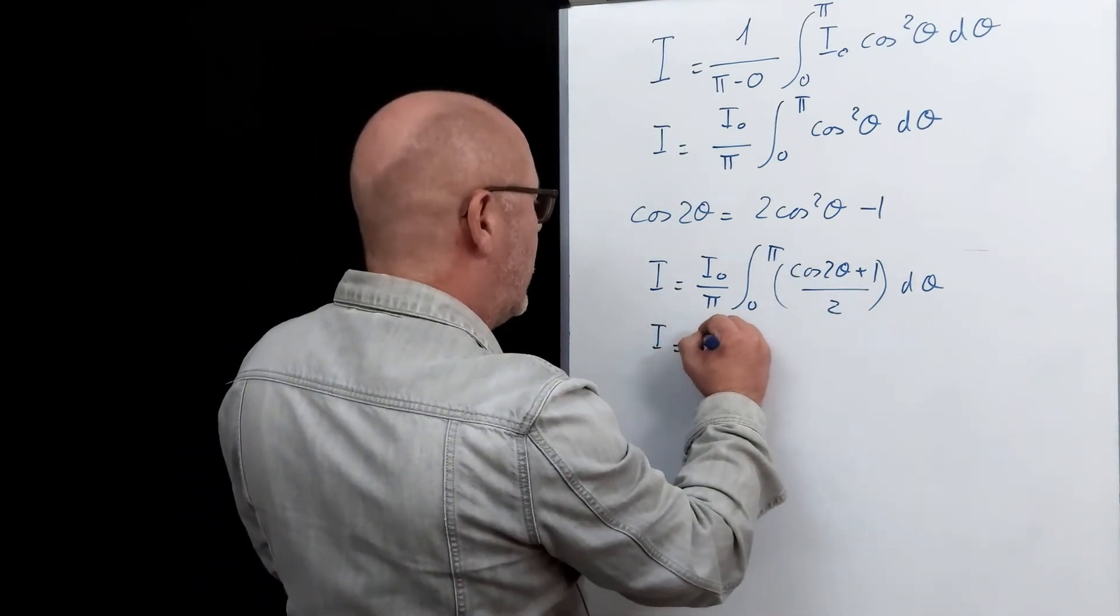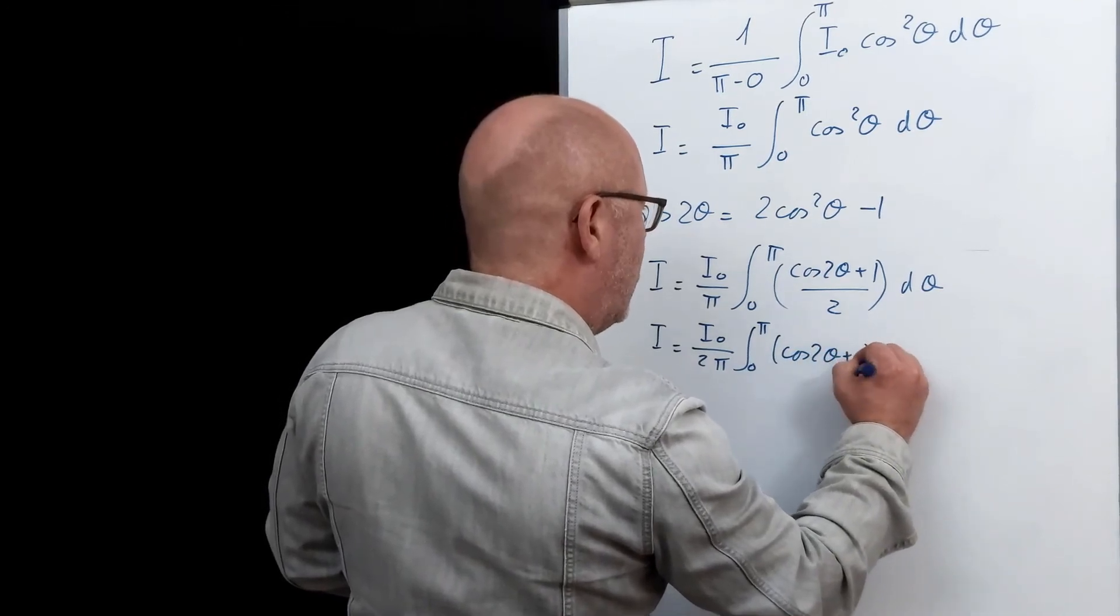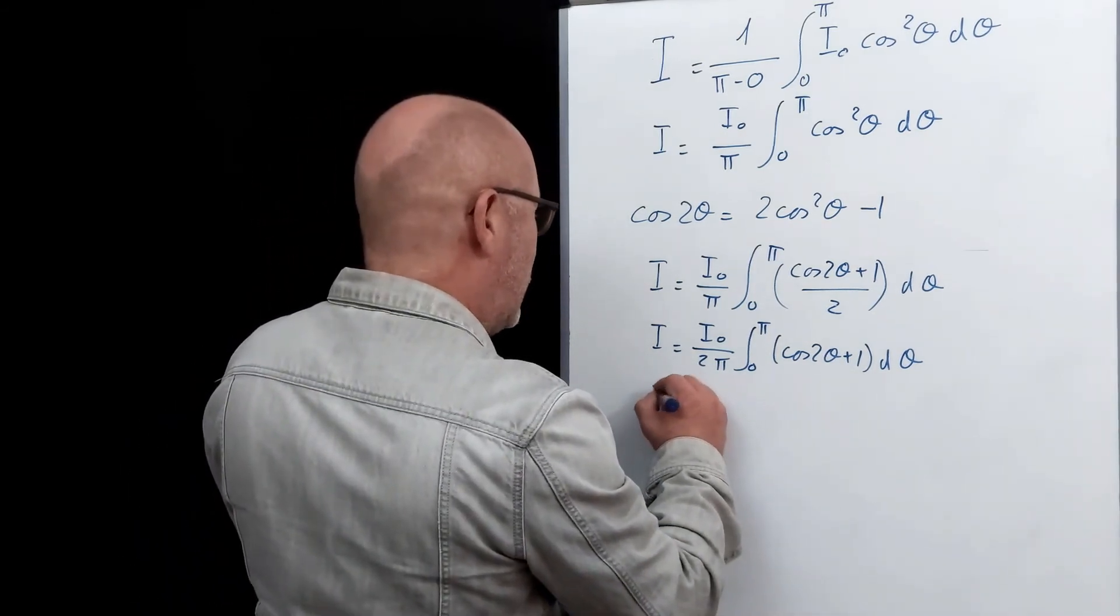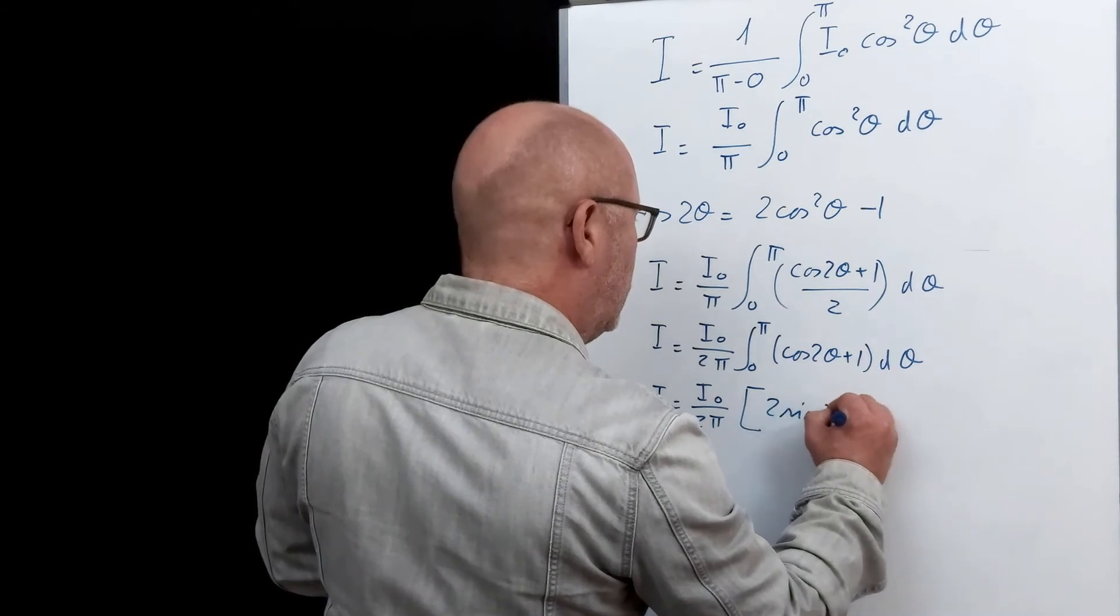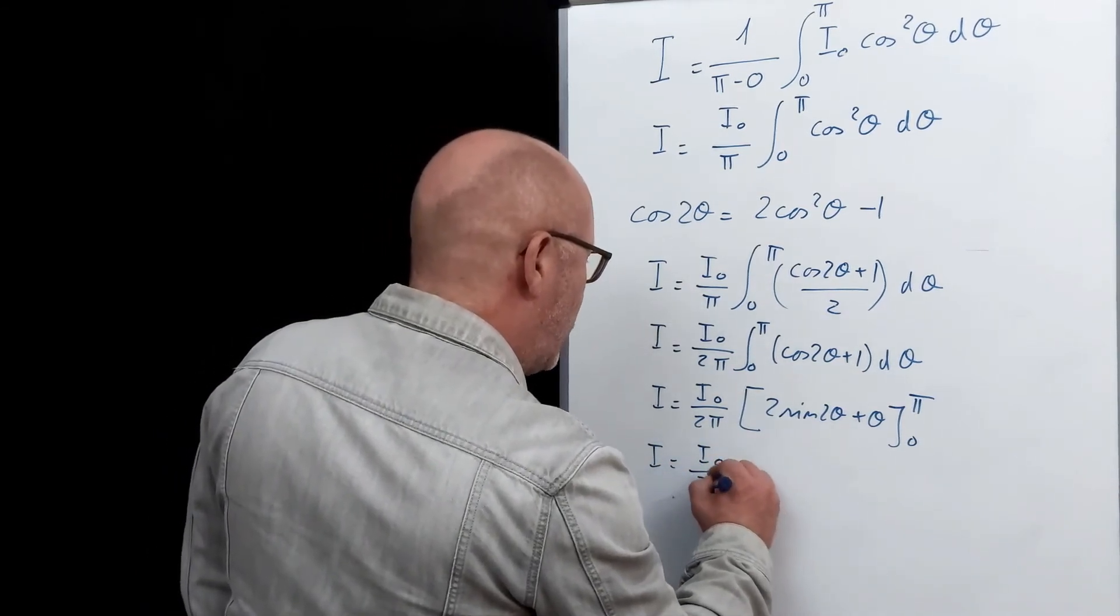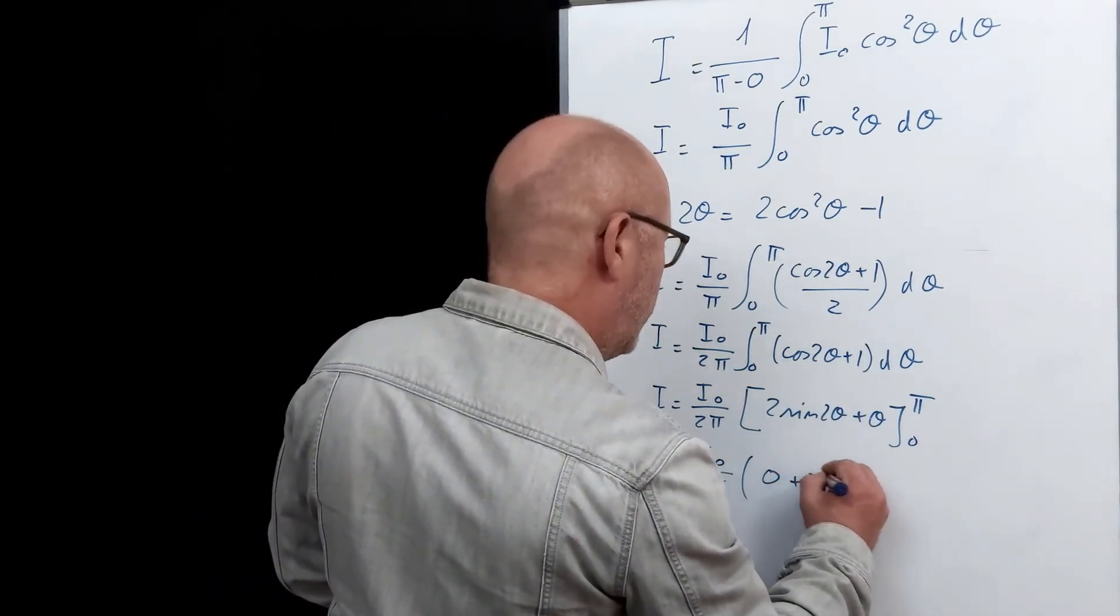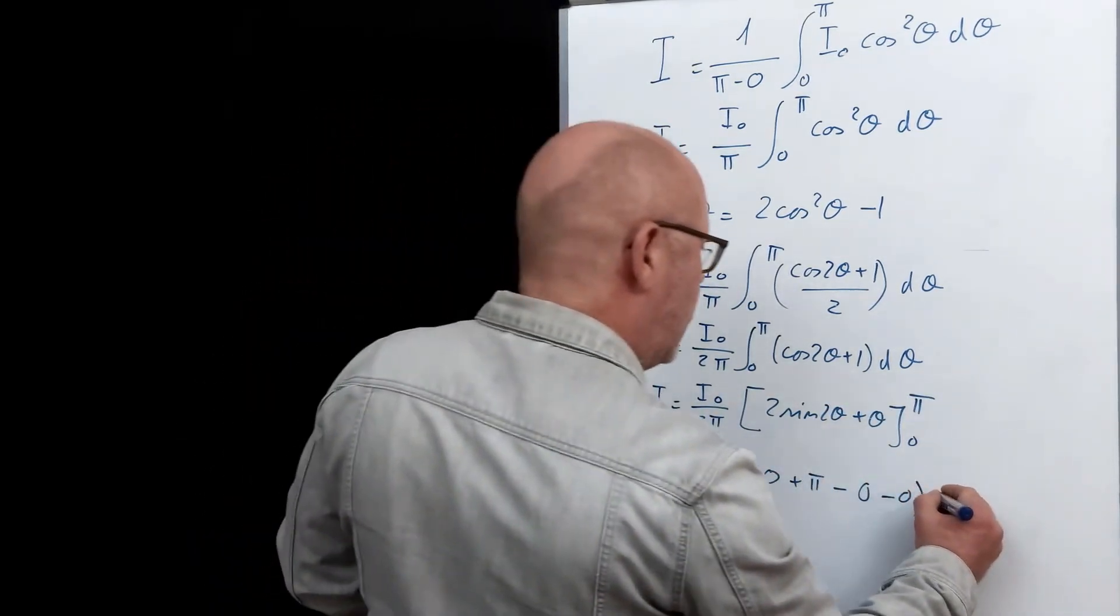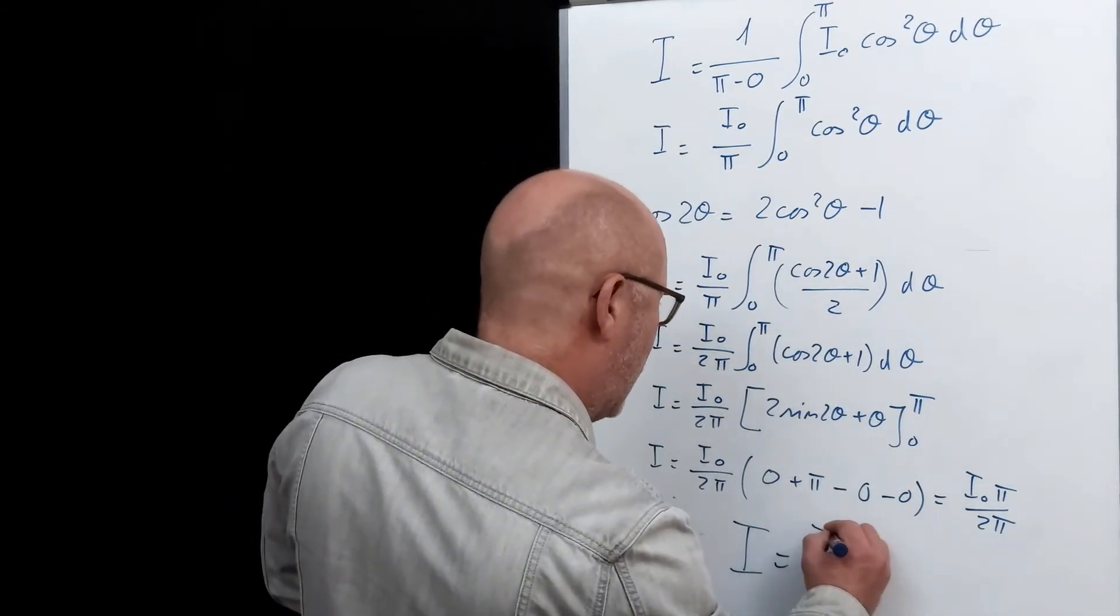The primitive of cos 2θ is sin 2θ over 2, and for 1 it's just θ. So I can write this: I0 over 2π times, 1/2 sin 2θ plus θ between 0 and π. And now I just need to develop this. So 1/2 sin 2π, well that's 0, plus π, minus 1/2 sin 0, that's still 0, minus 0. So that's just π. So that gives me I0π divided by 2π. I equals I0 over 2.